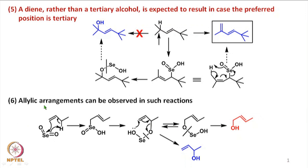According to the sixth rule, allylic rearrangements can be observed in such reactions. For example, in a case with a terminal double bond where the allylic hydrogen is located at a specific position, when selenium dioxide reacts with this olefin we can expect to get an intermediate having a selenide species, which can undergo rearrangement — as seen in earlier cases — with cleavage of the oxygen-selenium bond forming an intermediate where cleavage leads to an allylic alcohol.